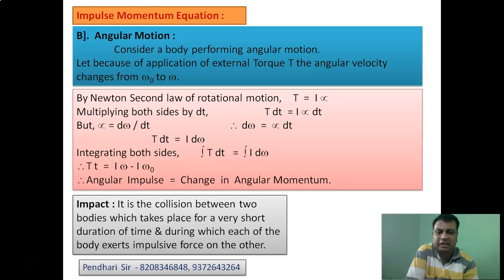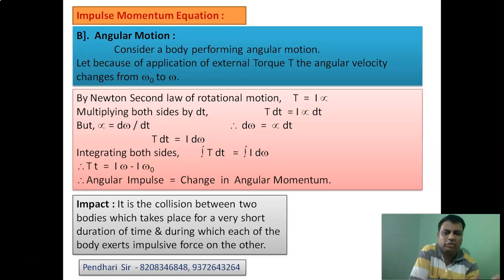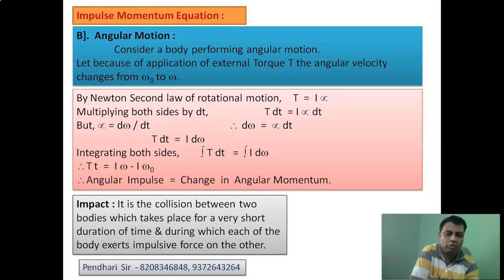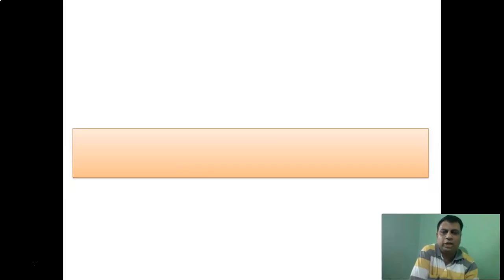Now let us look at impact. When two bodies collide with each other — strike each other for a very short duration of time — we call it impact. Impact is the collision between two bodies which takes place for a very short duration of time, and during which each body exerts an impulsive force on the other.